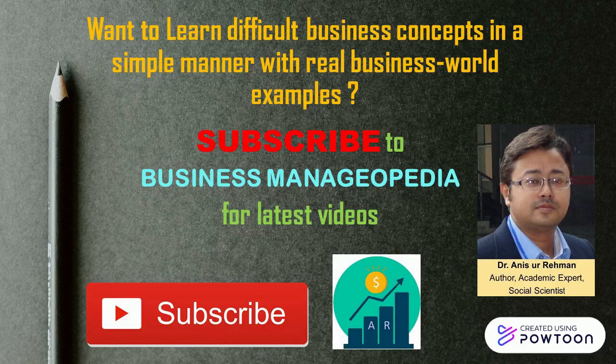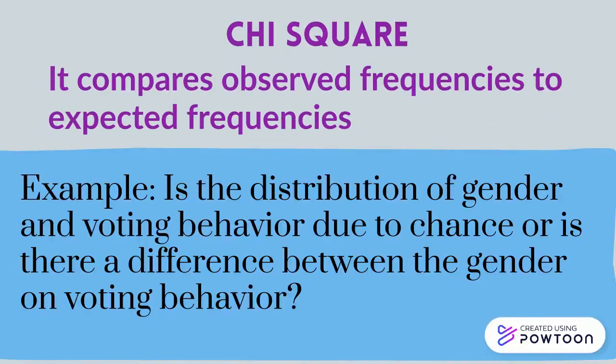Subscribe to Business Manageopedia for the latest videos. The first test is the chi-square test, which compares observed frequencies to expected frequencies. For example: is the distribution of gender and voting behavior due to chance, or is there a difference between genders on voting behavior? If you have a research question of this nature, you are going to use the chi-square test.